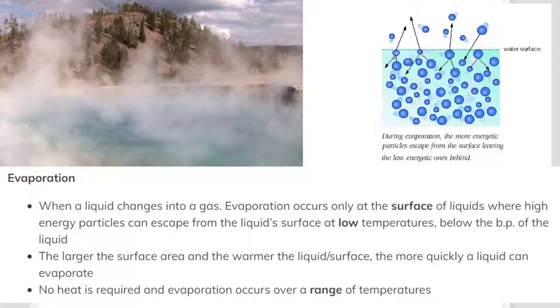Evaporation: when a liquid changes into a gas. Evaporation occurs only at the surface of liquids where high energy particles can escape from the liquid's surface at low temperatures below the boiling point of the liquid. The larger the surface area and the warmer the liquid surface, the more quickly a liquid can evaporate. No heat is required and evaporation occurs over a range of temperatures.